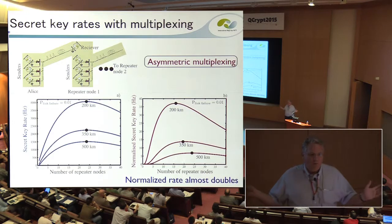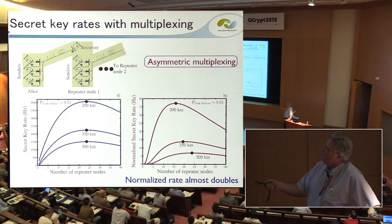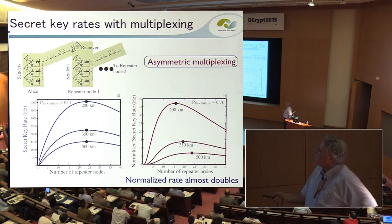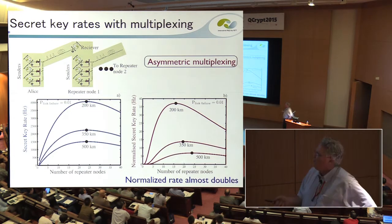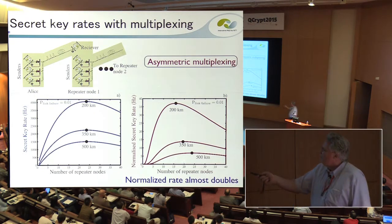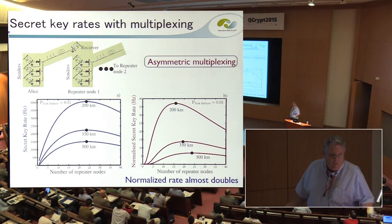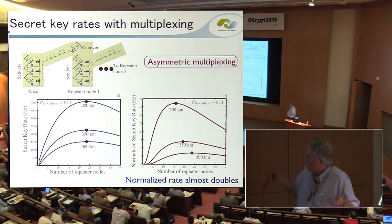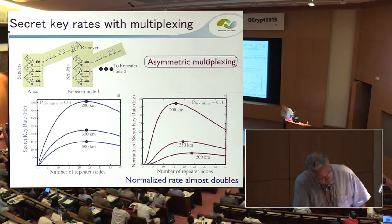There's been no multiplexing in the previous scheme — just two NV centers per cavity. If we go to multiplexing using an asymmetric n-to-one version, the rate effectively doubles, but it's still at 500 km these normalized rates aren't particularly great — about five hertz. That's something we have to live with; the question is what happens at longer distances.